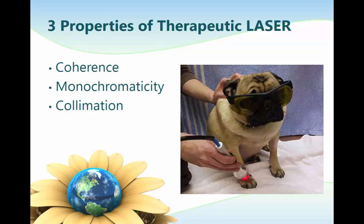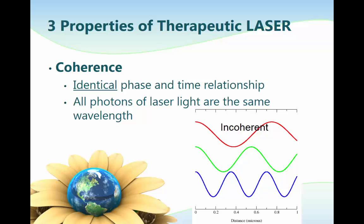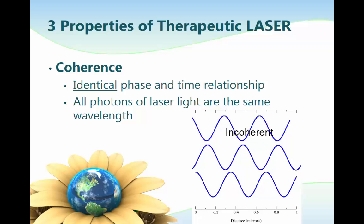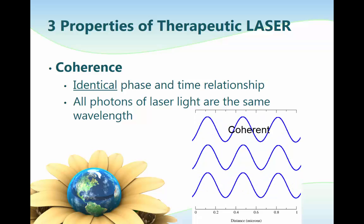There are three major properties of laser: coherence, monochromicity, and collimation. Coherence means that all photons of laser light have the same wavelength with identical phase and time relationships with other similar waves. Waves with different phases and time relationships are incoherent. In the last example, all photons of laser light are the same wavelength with identical phase and time relationships, and therefore they are coherent.